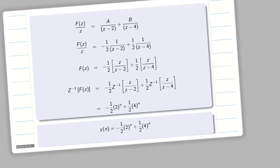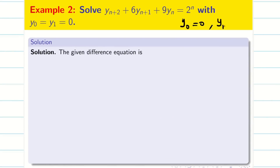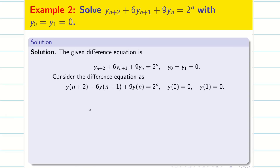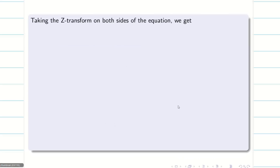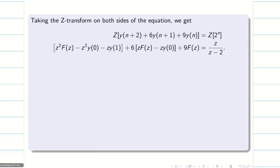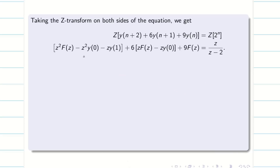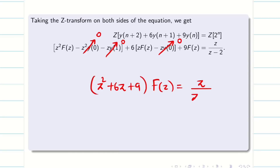Next, we go to a different problem where both initial conditions are 0. Write in our proper format, then write the Z-transform formulae for y(n), y(n+1), and y(n+2). Take this as equation 1 and apply Z-transform on both sides. Substituting the formulas, the right-hand side gives Z of 2^n, which equals Z/(Z−2). Since all initial conditions are 0, everything simplifies to (Z² + 6Z + 9)·F(Z) = Z/(Z−2).